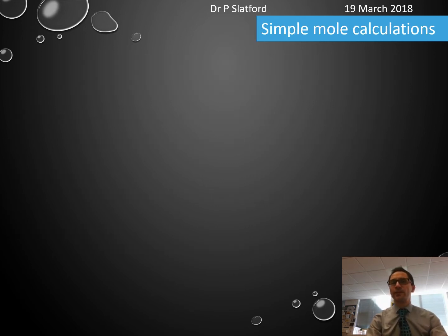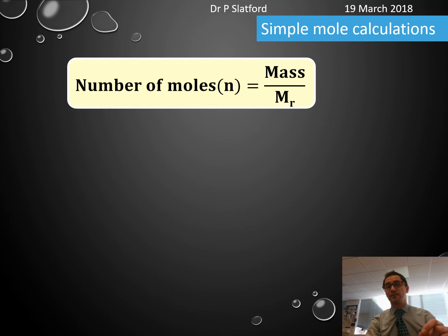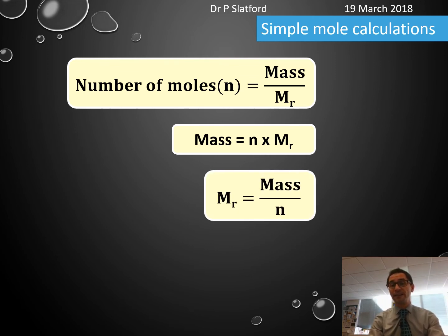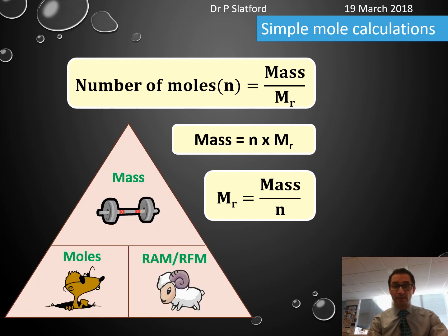Let's put a few equations together. The number of moles is the mass divided by the relative formula mass or atomic mass. Rearranged, mass equals the number of moles times the relative formula mass. Or the relative formula mass equals the mass divided by the number of moles.